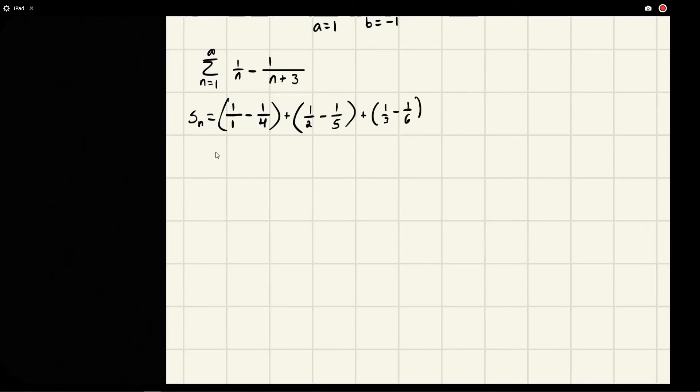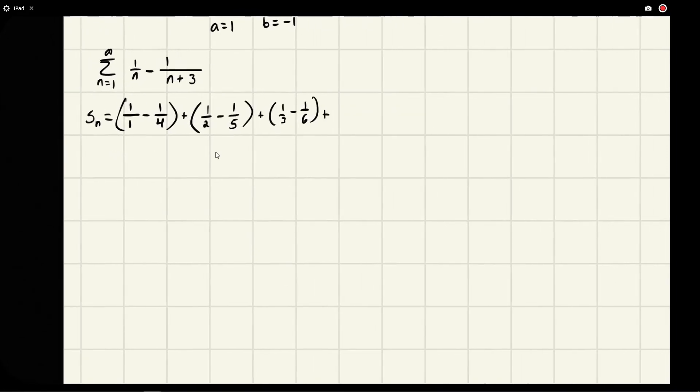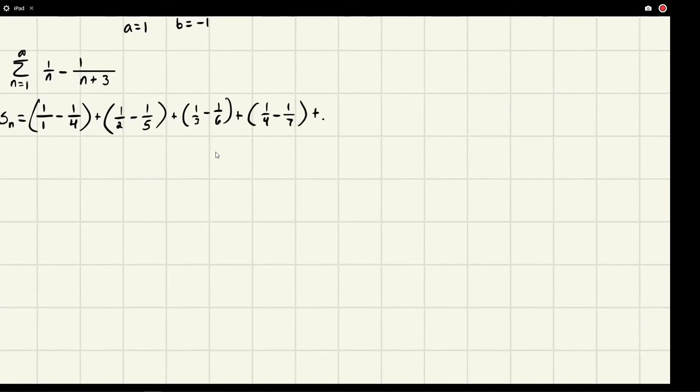And we're going to get 1 over 3 minus 1 over 6, and then we're going to add to it 1 over 4 minus 1 over 7, and this is going to go on and on and on.